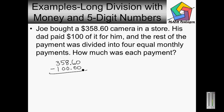Zero minus zero is zero, six minus zero is six — line up the decimals. Eight minus zero is eight. Five minus zero is five. Three minus one is going to give me two. So you get two hundred fifty-eight dollars and sixty cents. Now I want to figure out each payment, so I would do two hundred fifty-eight dollars and sixty cents divided by four.